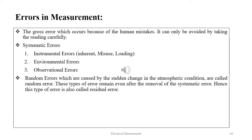Gross errors occur because of human mistakes and can only be avoided by taking readings more carefully. Systematic errors include instrumental errors, inherent misuse or loading, environmental errors and observation errors. Random errors are caused by sudden changes in atmospheric conditions. This type of error remains even after the removal of systematic error and is hence called residual error.